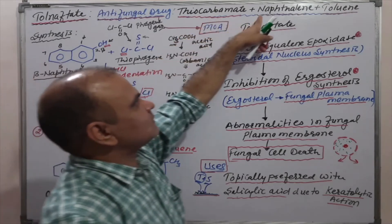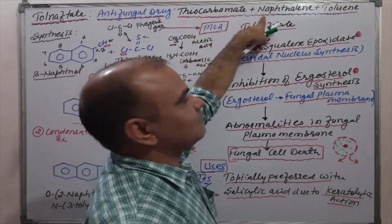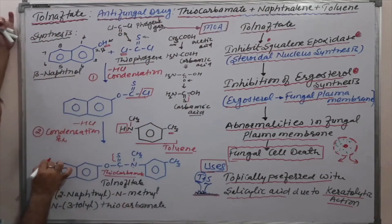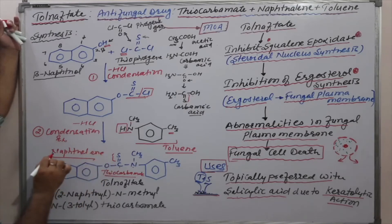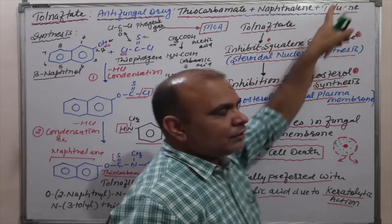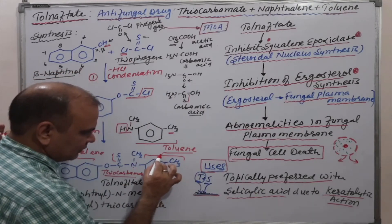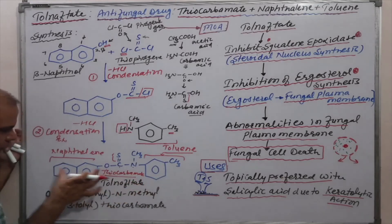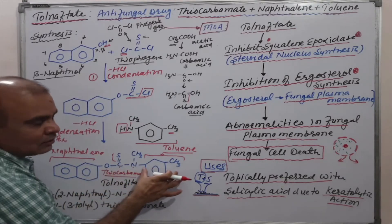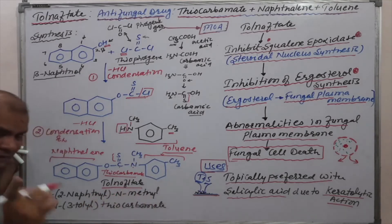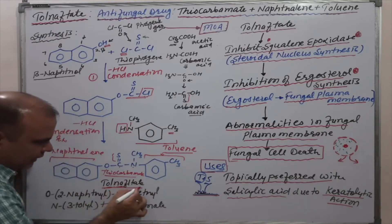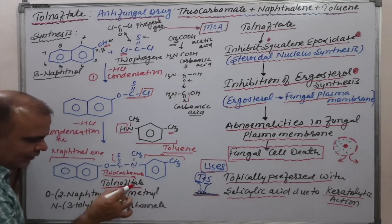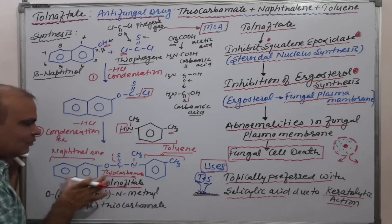Means thiocarbonate, naphthalene, and toluene together form tolnaftate. The name itself suggests this: 'tol' for toluene, 'nap' for naphthalene, and 'ftate' (thiocarbamate) for thiocarbonate. This is very simple, and you can easily understand and remember the structure. We can also write the IUPAC name based on this structure, with thiocarbonate as the main functional group used as a suffix.